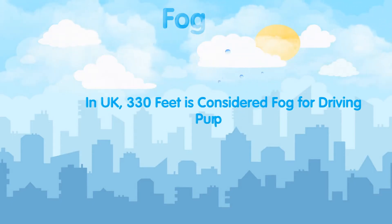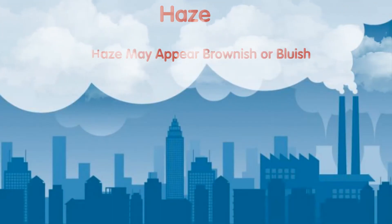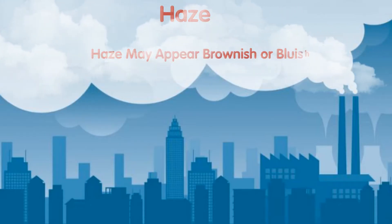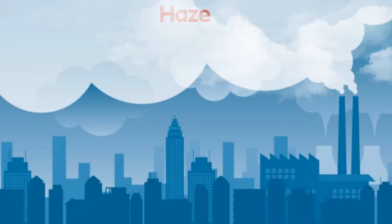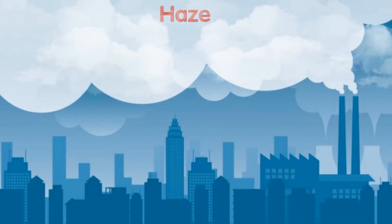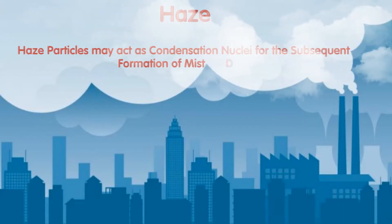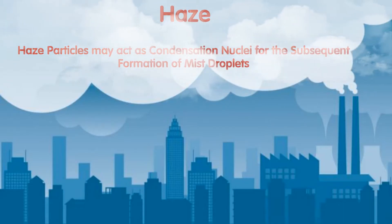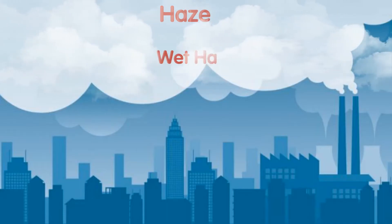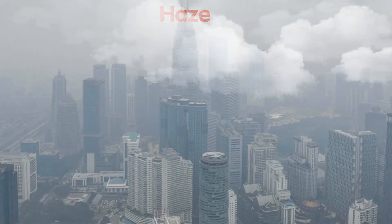In the UK, visibility of fewer than 330 feet is considered fog for driving purposes. Haze is seen from afar, and depending on the direction of view with respect to the sun, haze may appear brownish or bluish, while mist tends to be bluish-gray. Whereas haze is often thought of as a phenomenon of dry air, mist formation is a phenomenon of humid air. However, haze particles may act as condensation nuclei for the subsequent formation of mist droplets — such forms are known as wet haze.